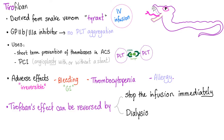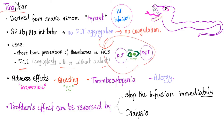The 'Tyrant-ban' — Tirofiban. It's derived from snake venom. You give it by IV infusion. It's a GP2B3A inhibitor; therefore, no platelet aggregation; therefore, no blood coagulation. Medical uses of Tirofiban: short-term prevention of thrombosis in acute coronary syndrome, including unstable angina, non-STEMI, and STEMI. Percutaneous coronary intervention with or without stent — same indications as Abciximab.